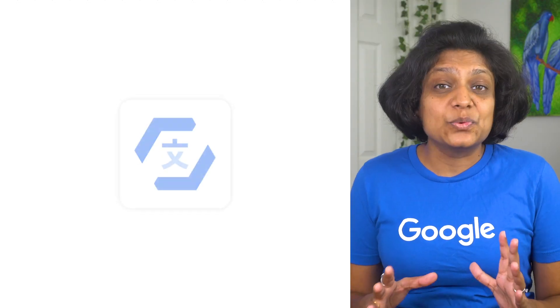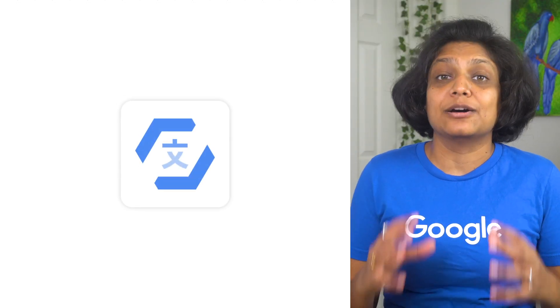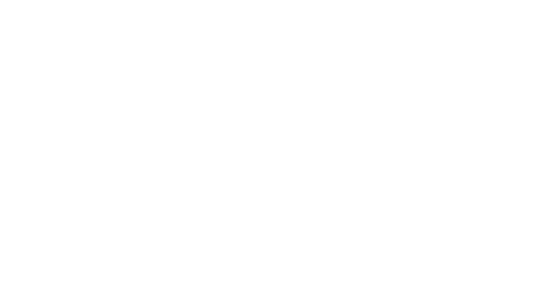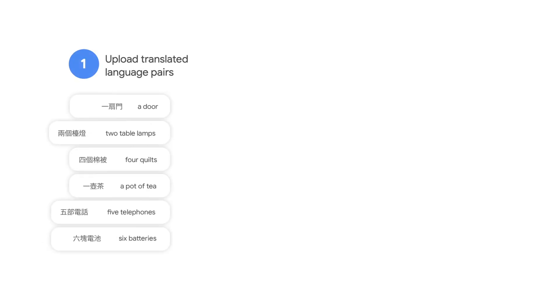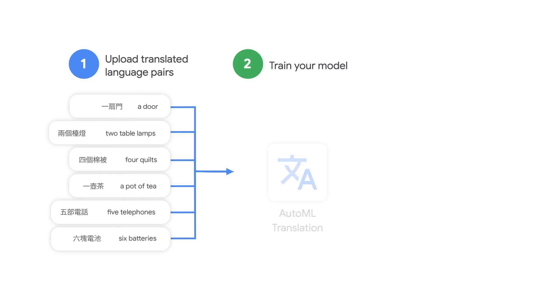That's where AutoML Translation comes to the rescue. AutoML Translation lets you create your own custom translation models so that translation queries return results specific to your domain.